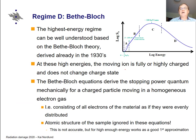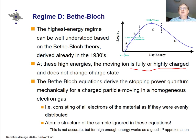At these high energies the ion is fully ionized or highly charged — meaning the electrons have been stripped off, so it is simply a nucleus traveling through the material. The Bethe-Bloch equations derive this stopping power quantum mechanically for a charged particle, that is the nucleus or highly charged ion, moving in a homogeneous electron gas.